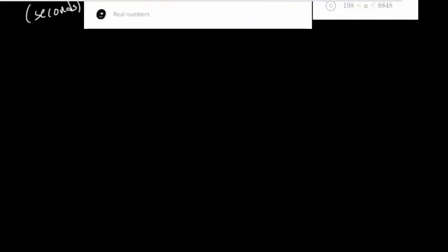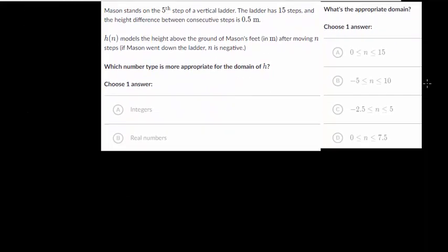So let's keep going on these. Some of these can be fairly challenging, and this time Mason is standing on the fifth step of a vertical ladder.